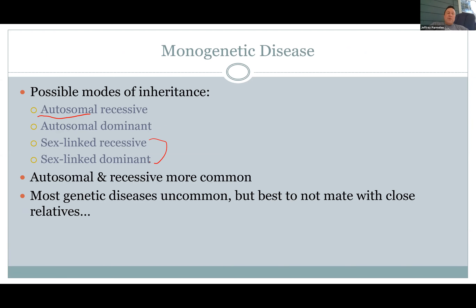Most diseases are recessive. Some students have a hard time wrapping their heads around how you can have a dominant genetic disease — if you have the allele you have the disease, so how would it be passed on? Well, some cases it's not completely penetrant, so you have the disease but you don't show it. And sometimes it appears later in life, like Huntington's, when you've already had your children. So you can see how it'd be easy to be passed on. You're all harboring genetic diseases, but they're usually recessive so you don't show them.